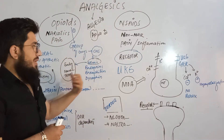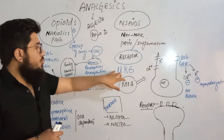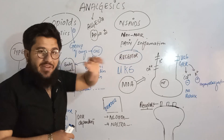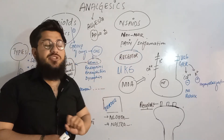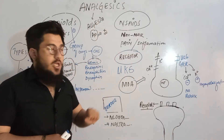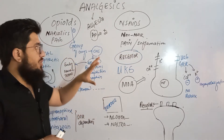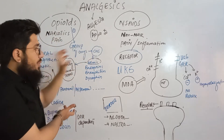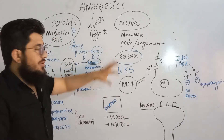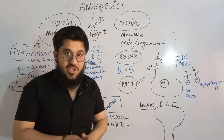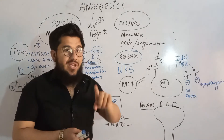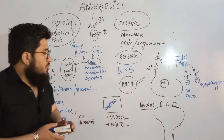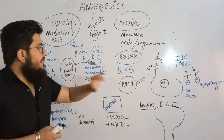Opioids act on three receptors: mu, kappa, and delta. These are present in the central nervous system and are responsible for mediating the actions of these drugs. When opioids bind to these receptors, the result is alleviation of pain.